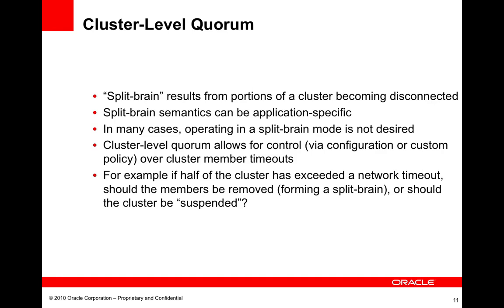To summarize, in 3.6 we've introduced a number of features all targeted towards configuring and exerting a bit more control over how Coherence behaves in the absence of expected or planned-for physical resources. We can do this both at a service level — which allows fine-grained control over service-specific behaviors like cache writes, distribution, proxy connect, and things like that — and also at the cluster level, where we're looking at how we respond to member timeouts, member join requests, and things of that nature.